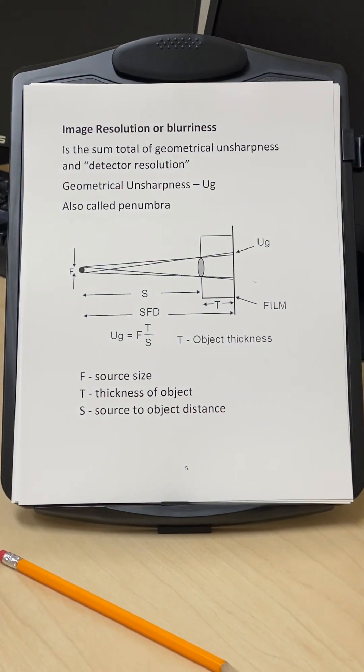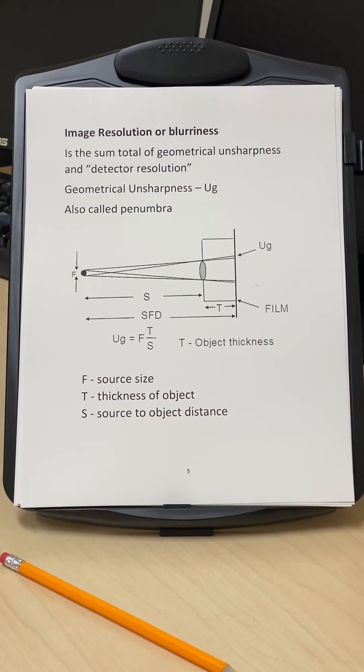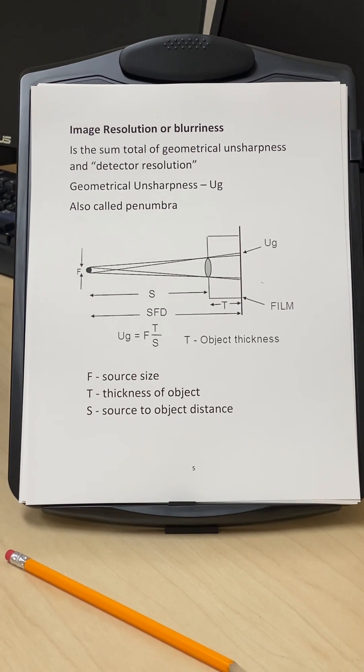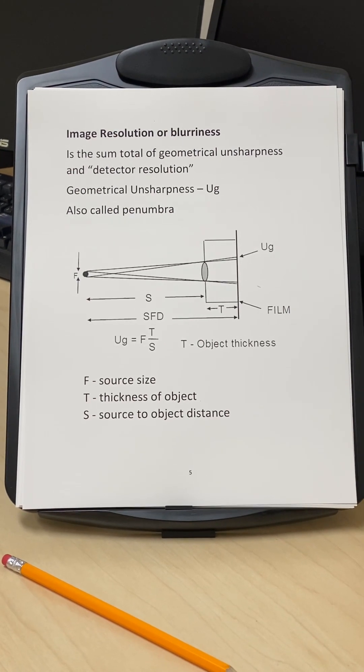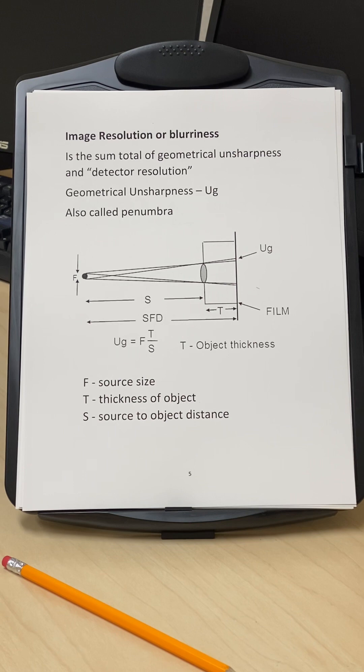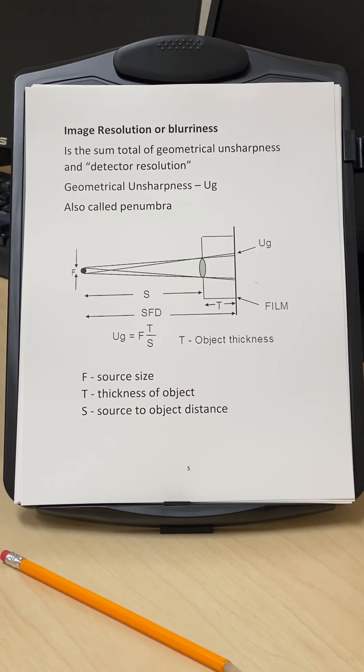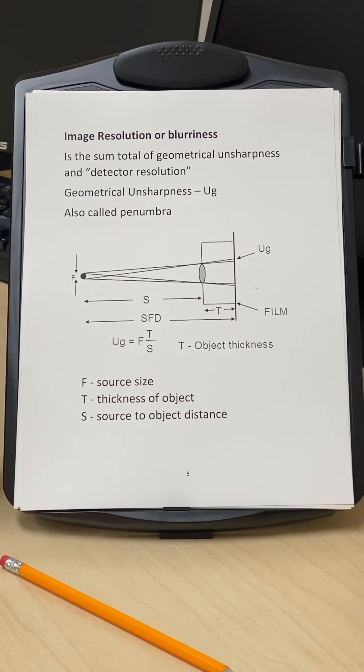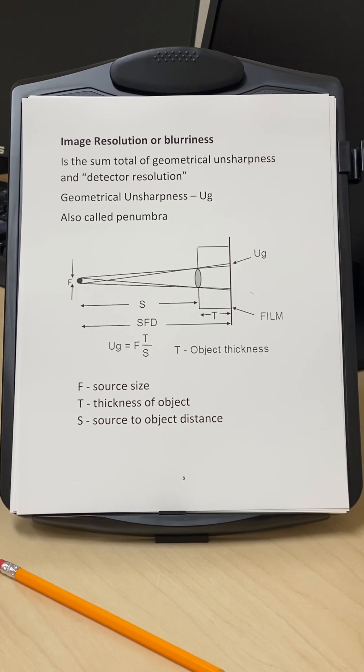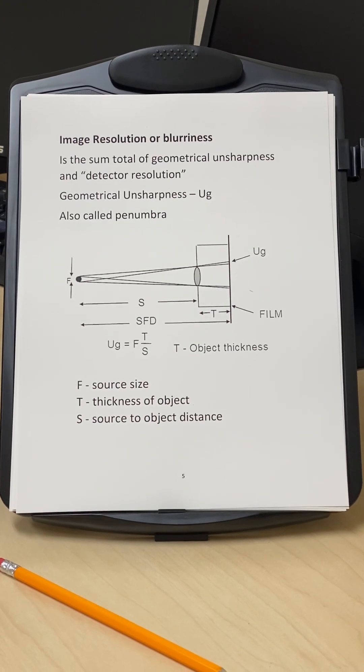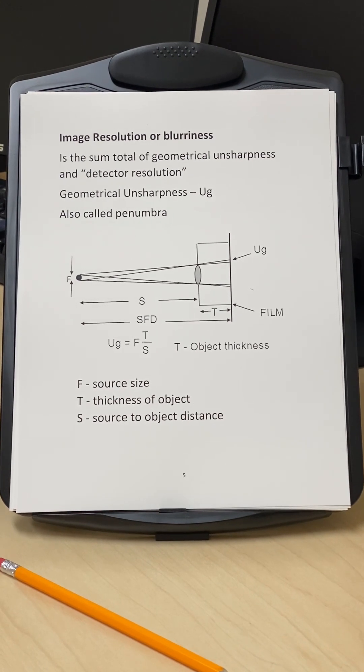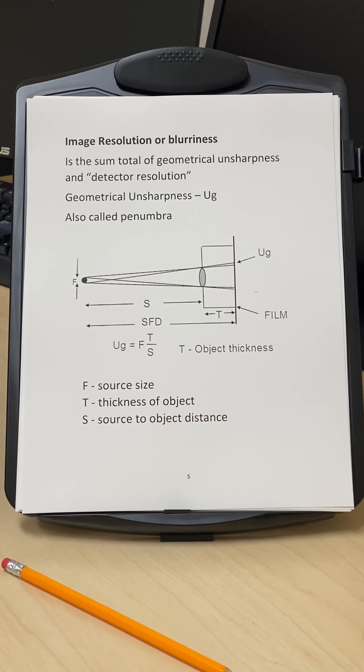The difference really comes in, the big difference actually between film and digital comes into play for the image resolution. So we have to understand that it's not just the detection of the indication, it's also the characterization. And if we actually cannot characterize the indication correctly, we can actually misinterpret.